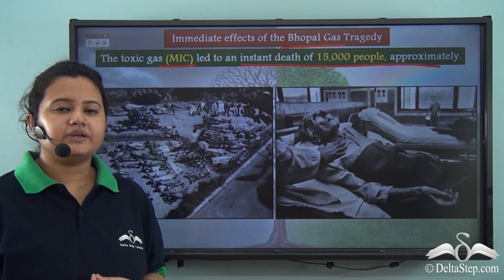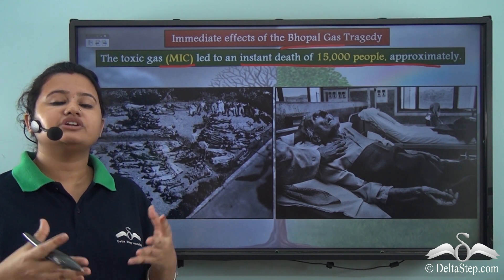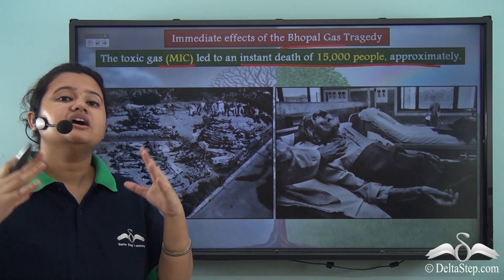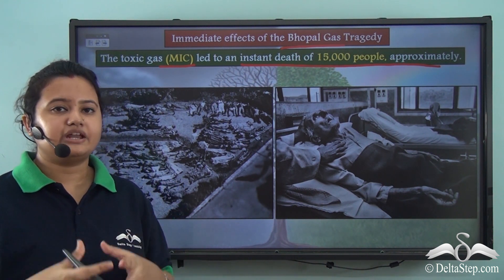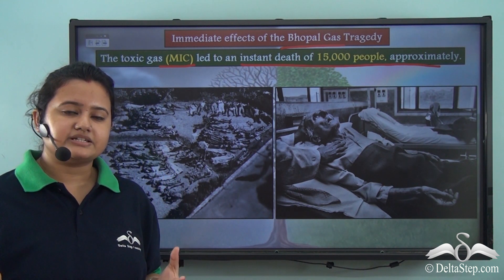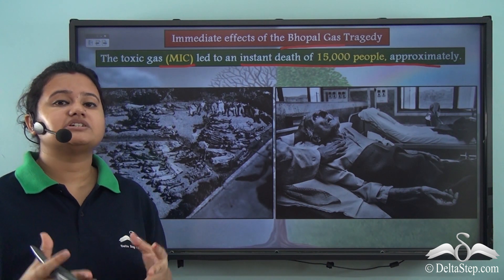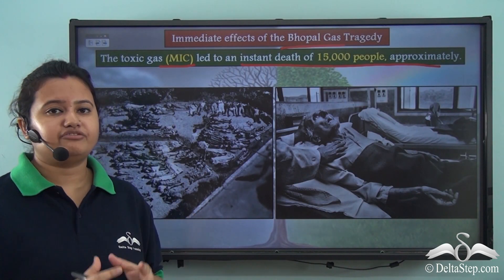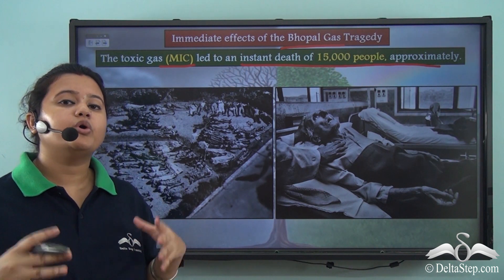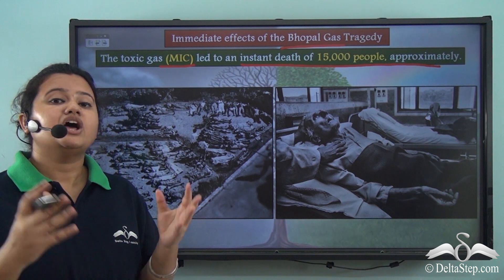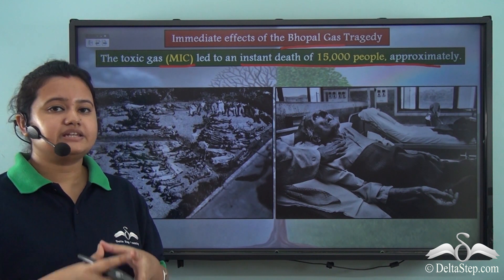Apart from human beings, the toxic gases released into the air also affected the surrounding environment. For instance, the trees were damaged and the leaves turned black. These are the immediate effects of the Bhopal gas tragedy, but the incident also resulted in long-lasting ailments.